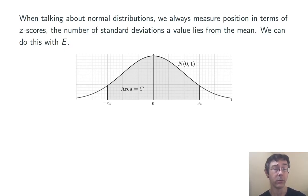We're going to look at the standard normal distribution, N of 0, 1, keep area equals C, and try and find a z-score so that we get area C between negative z-star and z-star.